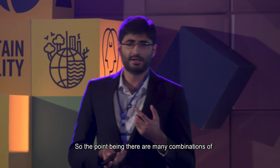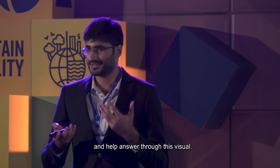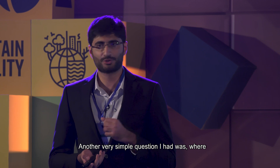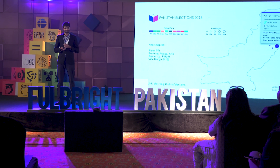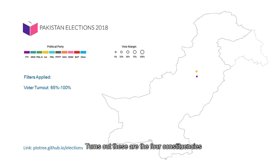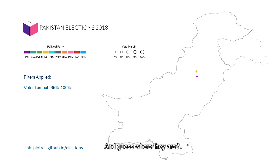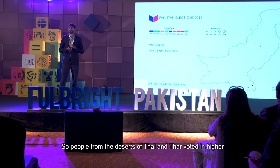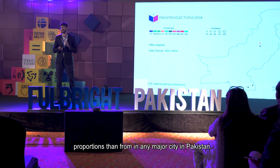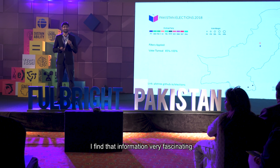The point being, there are many combinations of questions you could ask and answer through this visual. Another simple question I had was: where in Pakistan do we have the highest voter turnout? Turns out, the four constituencies with the highest voter turnout are in District Tharparkar in Sindh and in District Bhakkar in Punjab. People from the deserts of Thal and Thar voted in higher proportions than from any major city in Pakistan — I find that very fascinating.